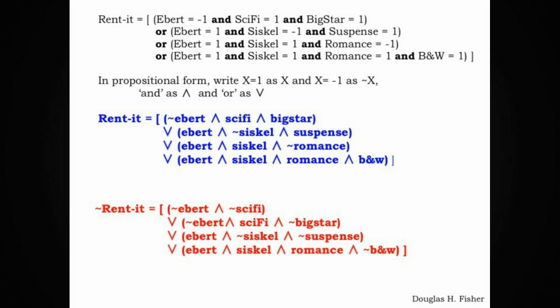I've also replaced the variable value pairs with more typical propositional symbol representations. For example, Ebert equals 1 would simply be replaced by the proposition Ebert, lowercase e. Ebert equal negative 1 would be replaced by not Ebert or tilde Ebert. So very simple rewriting to put this back into the syntax of propositional logic.